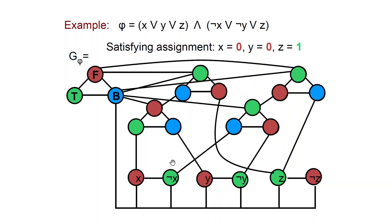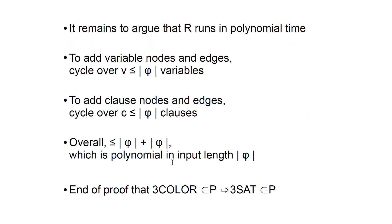It remains to argue that R runs in polynomial time, which is simpler than the rest. Given the formula, we write down the graph. To write down the variable nodes and edges, we examine the variables. To add the clause nodes and edges, we go through the clauses. Overall we do something polynomial in the input length, and this concludes the proof that if 3-Coloring is in P, then also 3SAT is in P.